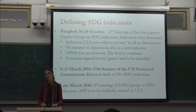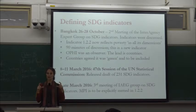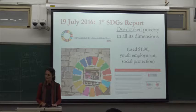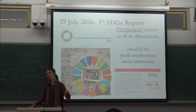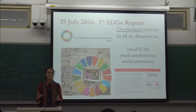I understand that MPI may again be named explicitly as an indicator of 1.2.2. What had happened in the meantime is that indicator 1.2.2, which was multidimensional, was referred to by the same language as the overall target, meaning people didn't understand what it was actually measuring. In July, just a couple of weeks ago, the Secretary General released the first SDG report, but it only used very clear indicators — for Goal 1, only $1.90 a day, youth employment, and social protection — because these were agreed as Tier 1 indicators.